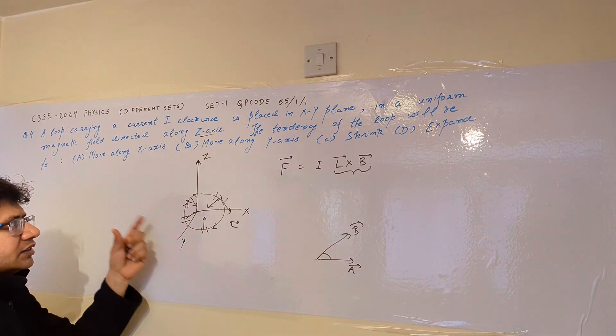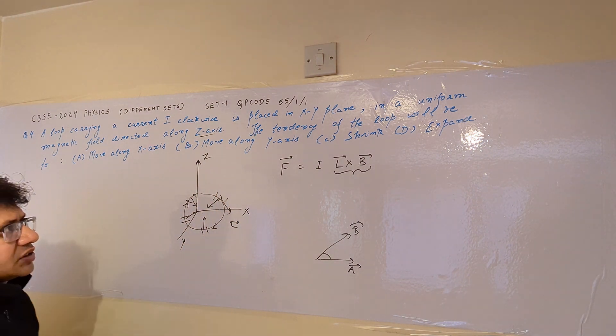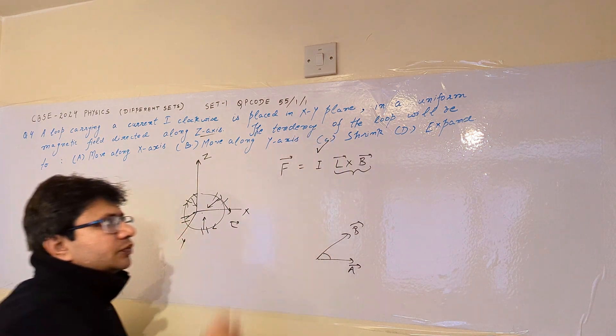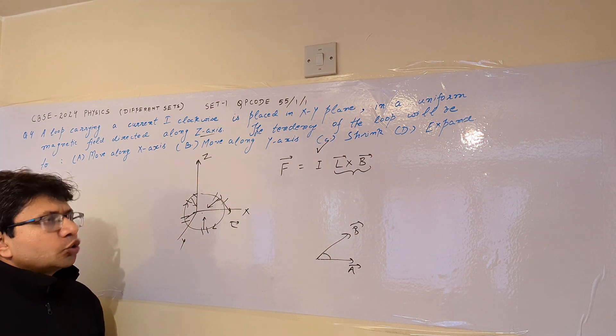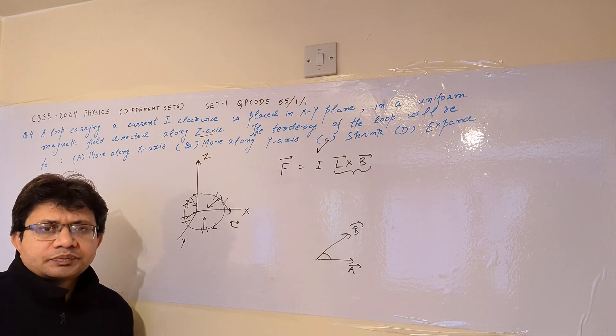In this manner we can see that the loop tries to shrink. So the loop will shrink, and option C is correct. Hope you understood this problem. Thank you.